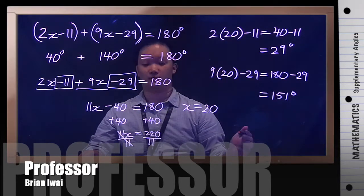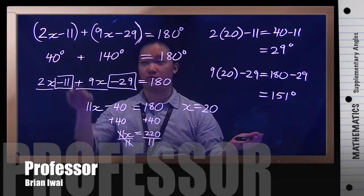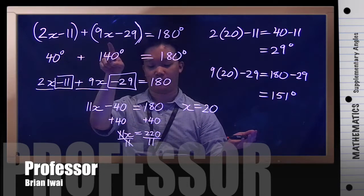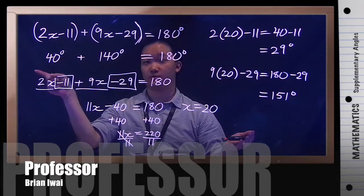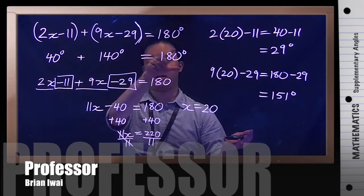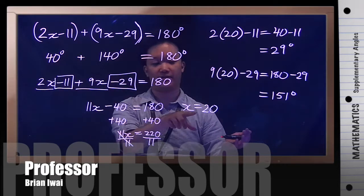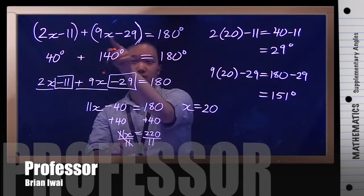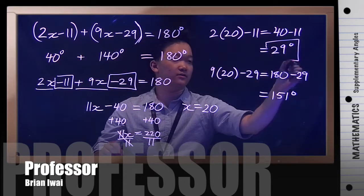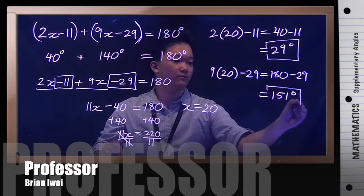So again we wanted to find the supplementary angles with measures of 2x minus 11 and 9x minus 29. So we first added the two and set it equal to 180, we solved for x, and then we plugged it back into the two expressions and we got 29 degrees and 151 degrees.